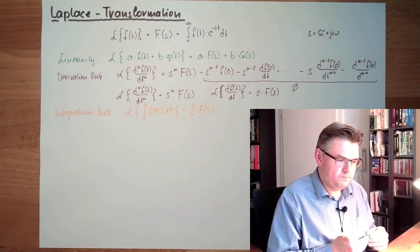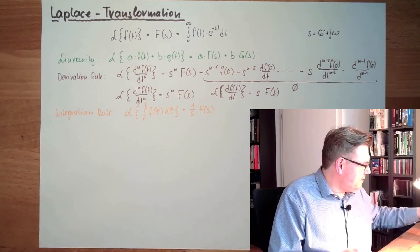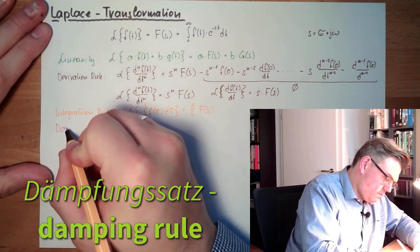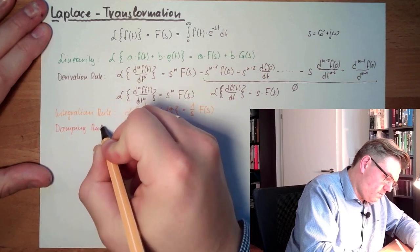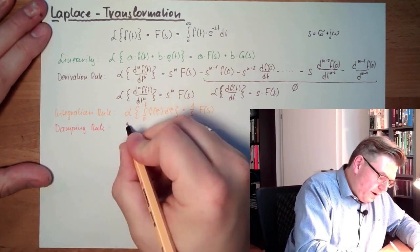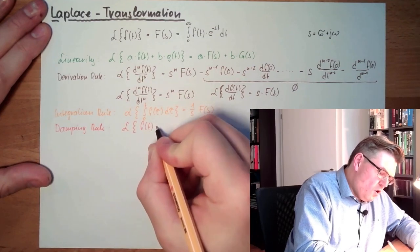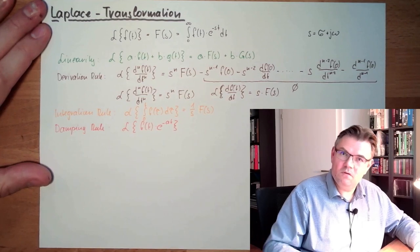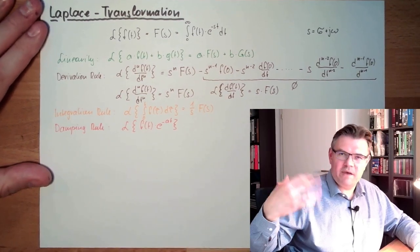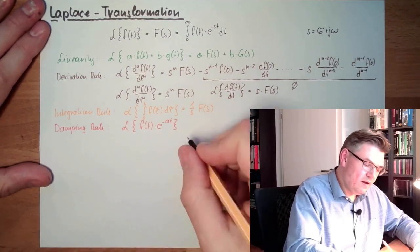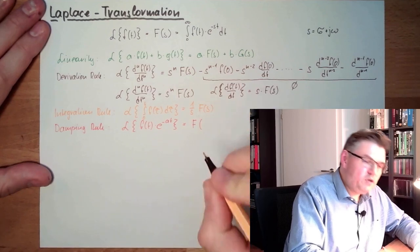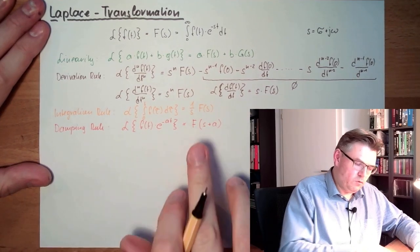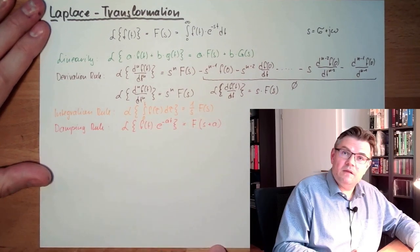Then there is the damping rule. It states that if we do the Laplace transform of a function which is damped in time — getting smaller over time, like the discharge of a capacitor — then in the picture area we are shifting this by the damping factor. If something is shifted in the picture area, it is damped in the time area.